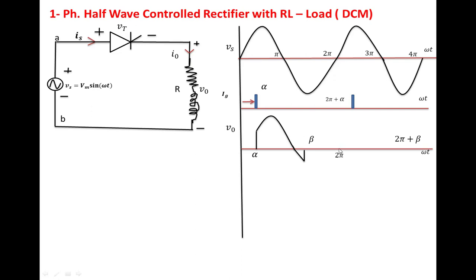After 2π, the SCR is forward biased, but we apply the triggering voltage at 2π + α. The SCR turns on at 2π + α, and the output voltage equals the input voltage up to 2π + β.